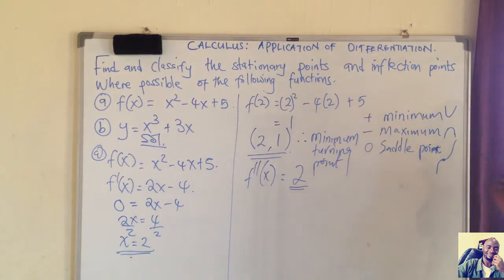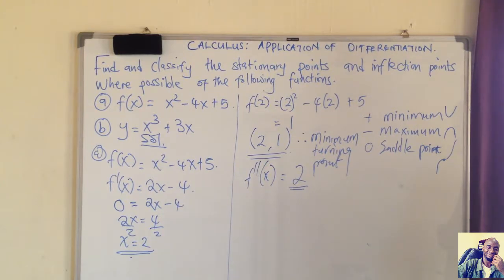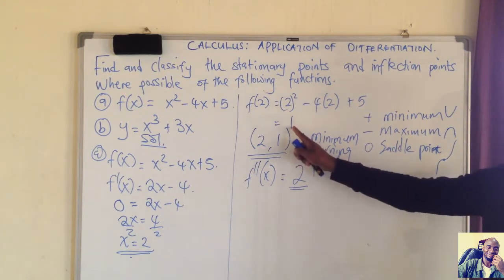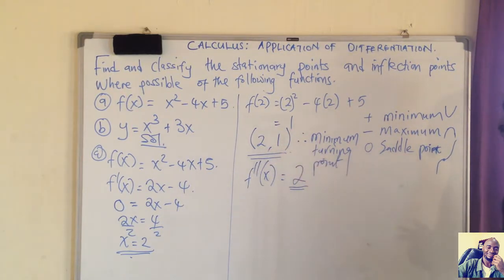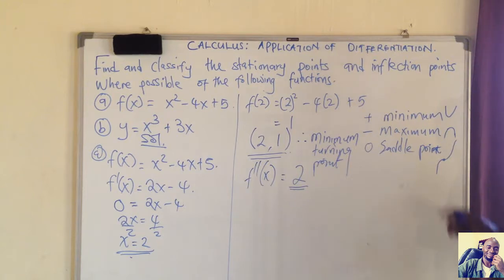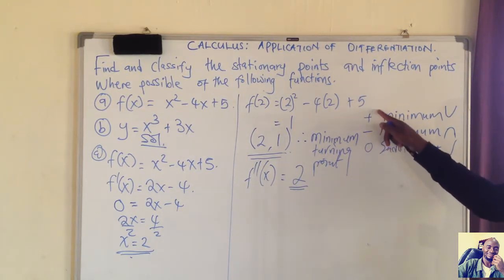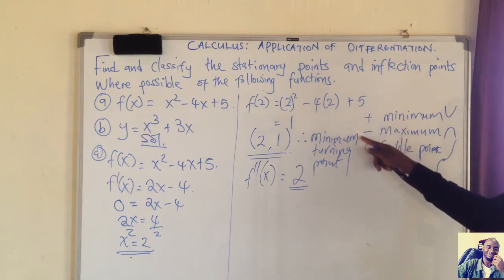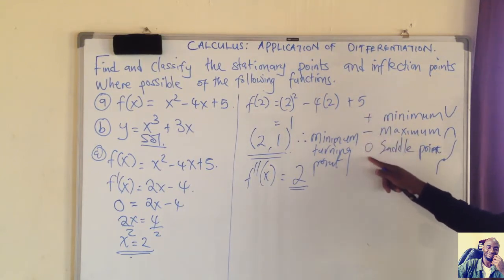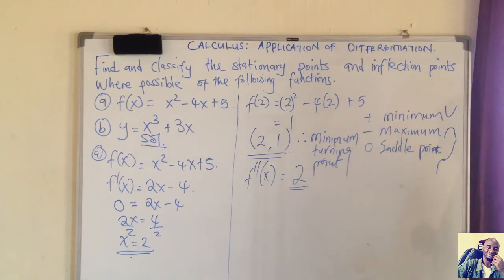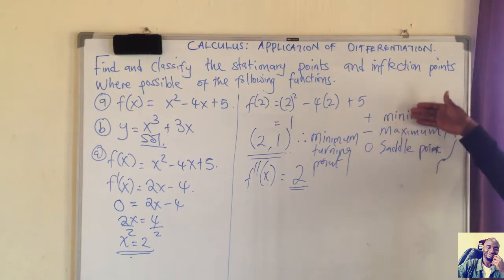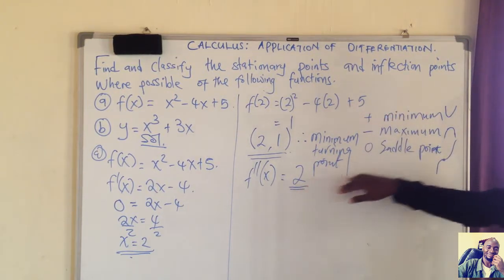Every time you have to find stationary or critical points, the procedure is: find the gradient function, equate it to zero, find the value for x, substitute into the original function to find y, identify the point, then classify it as minimum, maximum, or inflection point. For a minimum the second order derivative is positive; for a maximum it is negative; for an inflection point it is zero. This is called the second order derivative test.